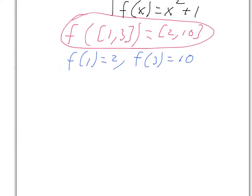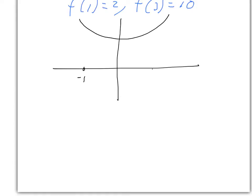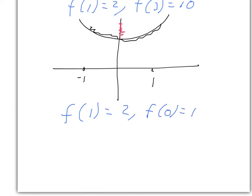Now let's do the other one: the image of the interval from minus 1 to 1. Here's minus 1, here's plus 1. We're interested in all of the heights on the graph as x ranges from minus 1 to 1. The heights seem to go from the minimum height up to f of 1. We calculate f of 1 equals x squared plus 1 equals 2, and f of 0 equals 1. Therefore, the image of the interval from minus 1 to 1 is the closed interval from 1 to 2.